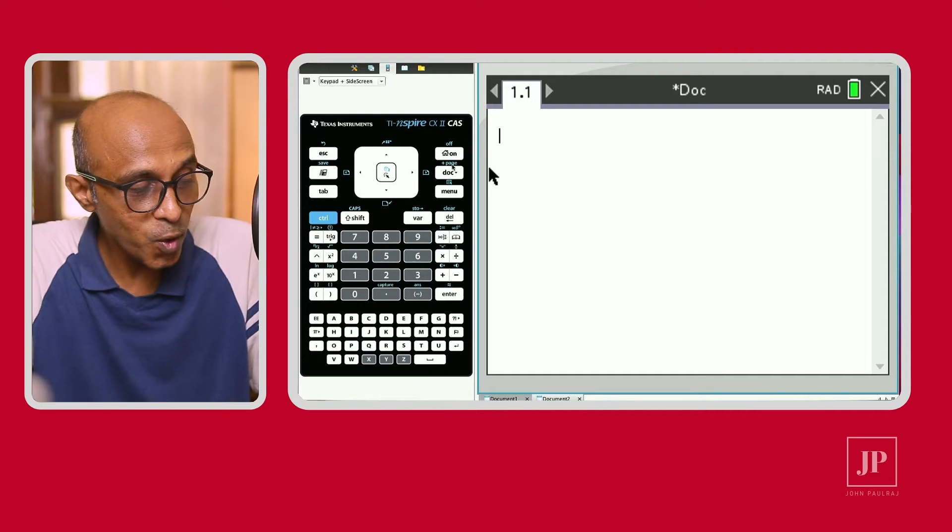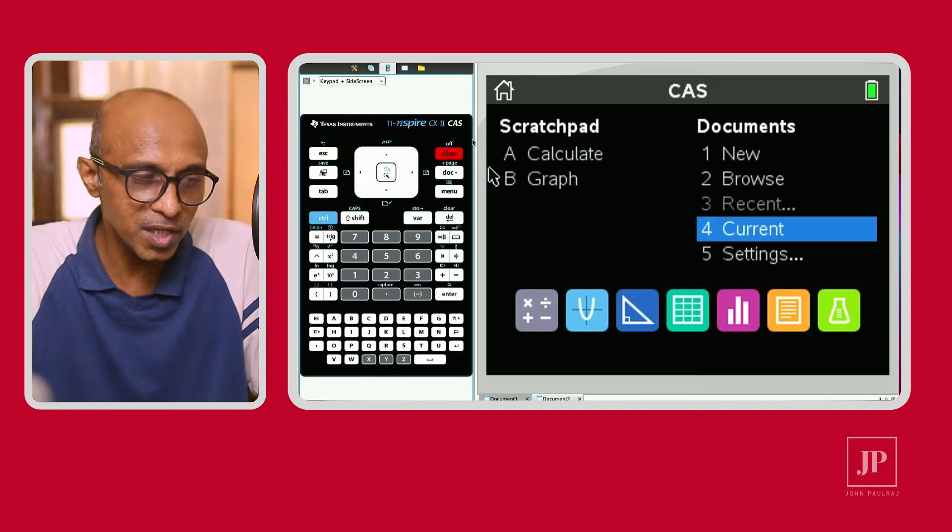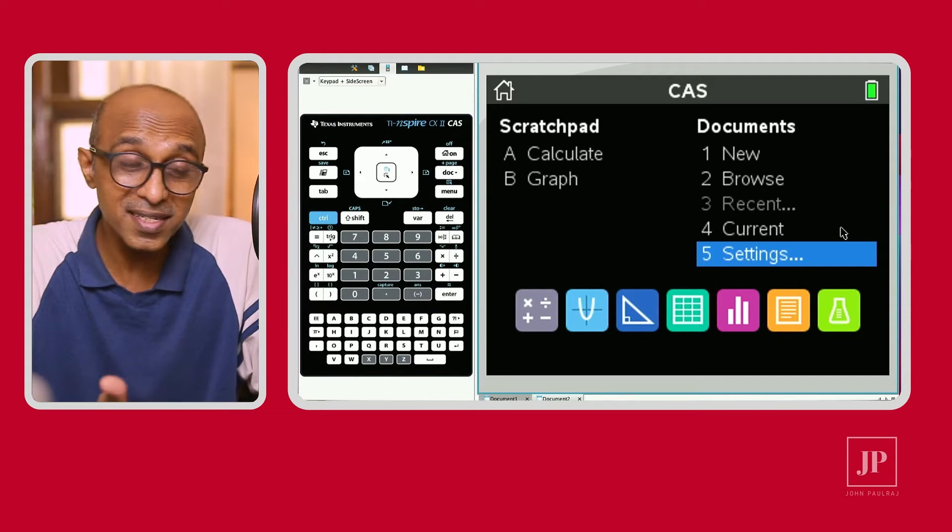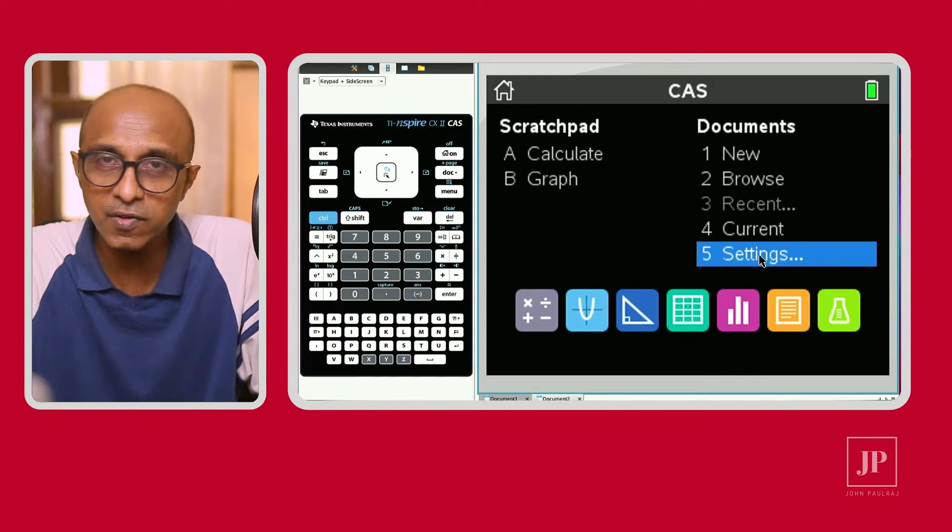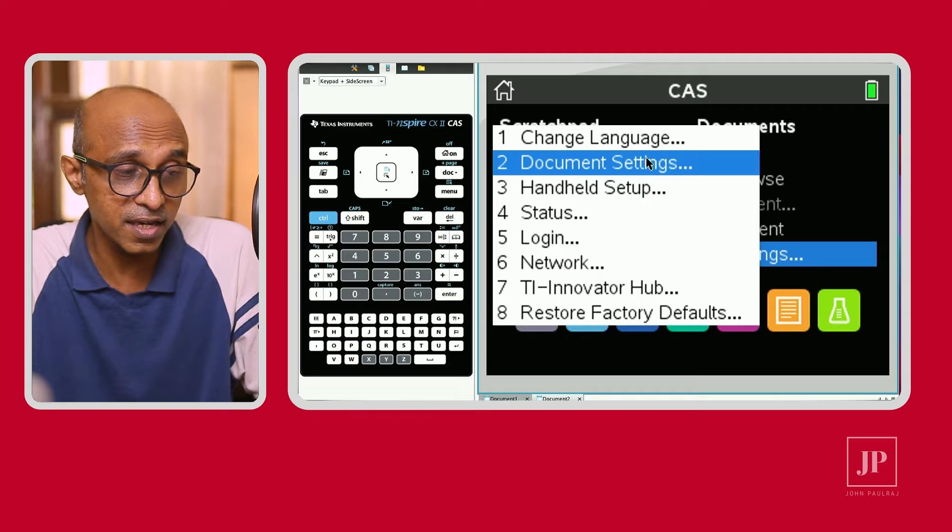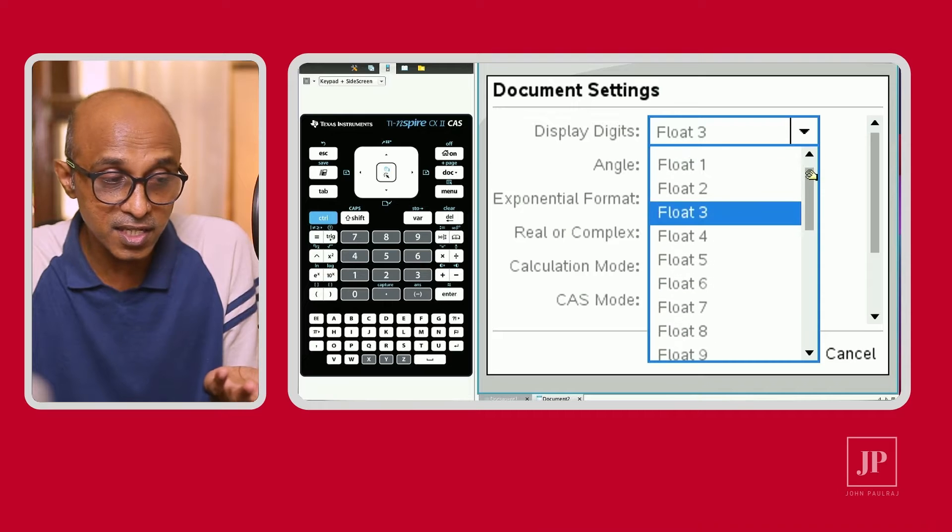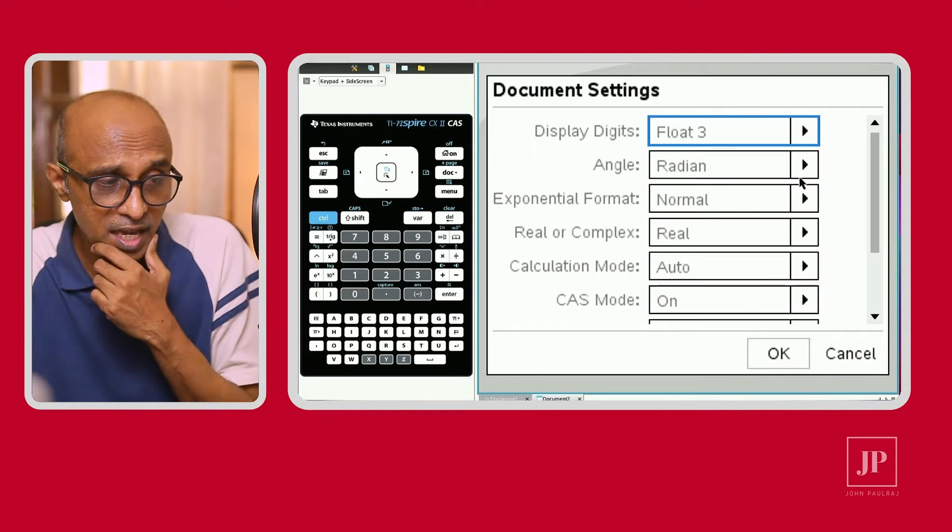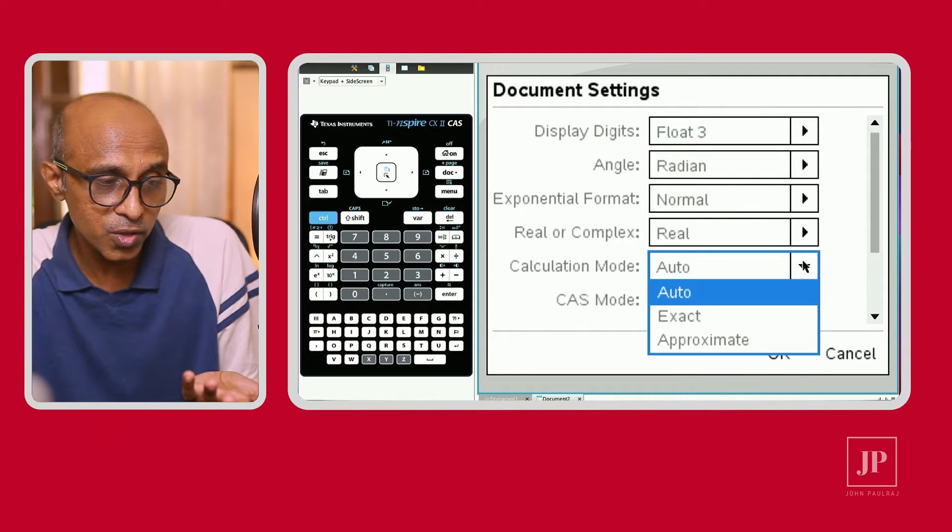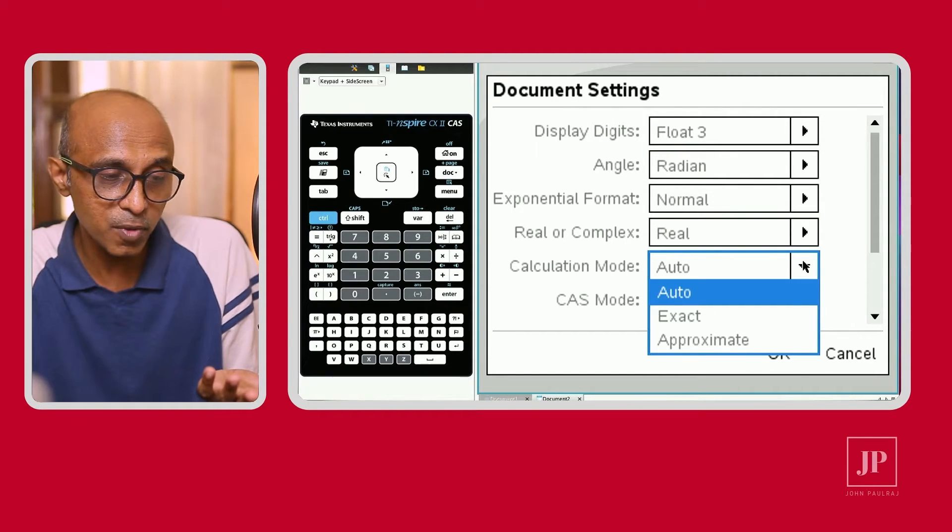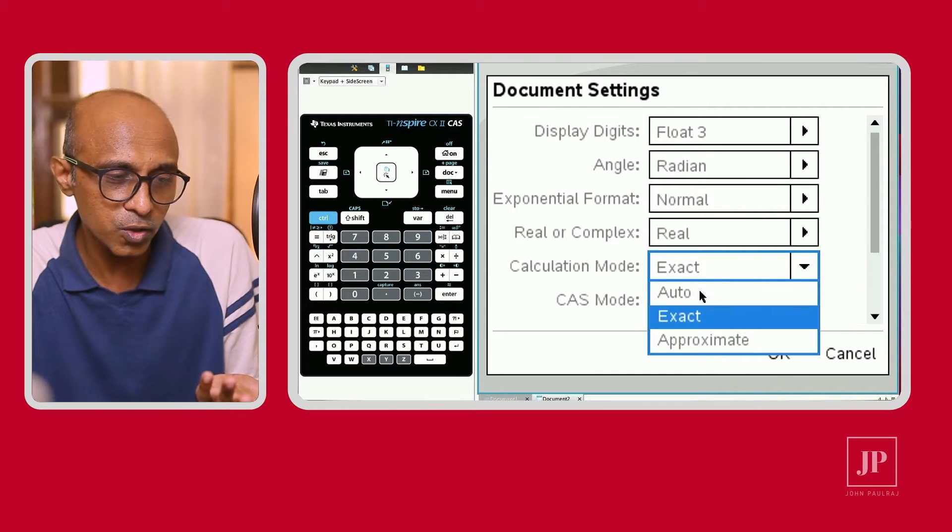All right, the first key is the home key. Some people like to call it the on-off key. I prefer calling it the home key because that's the icon that's present there. So why is this key my number one favorite key? It's because here's where I can find the settings for the calculator. If I need to make any changes, like I can go to the document settings and change from significant figures to decimal places, this is where I need to go and find out if I need to make any changes to the angle, calculation mode, whether auto, exact, approximate. Leave it at exact right now, or I leave it at auto.